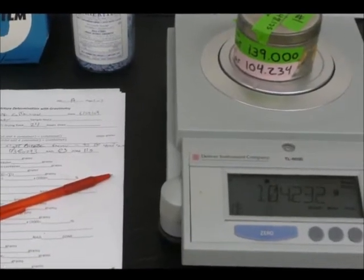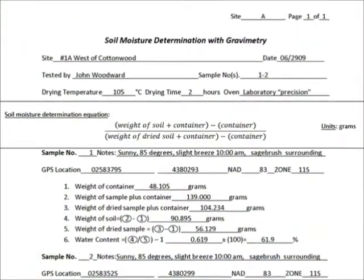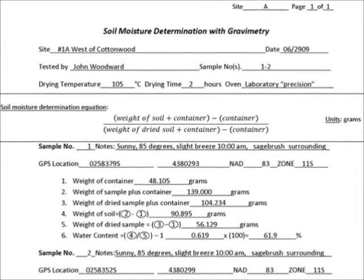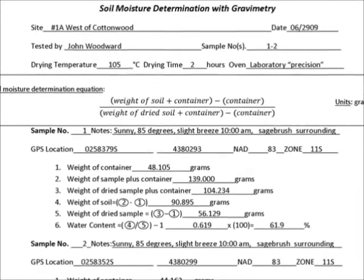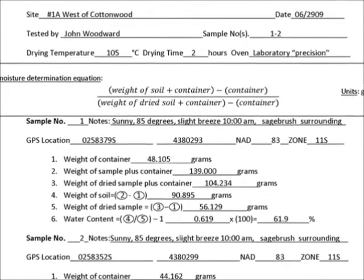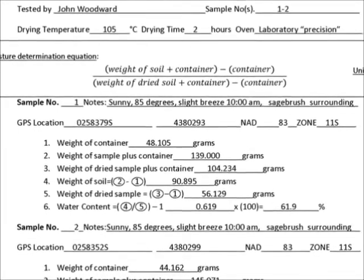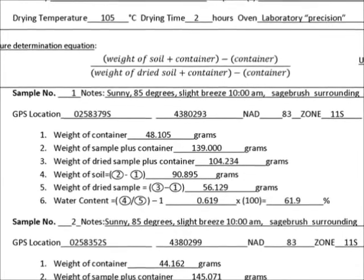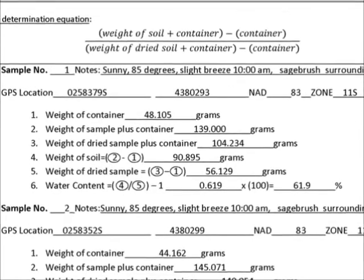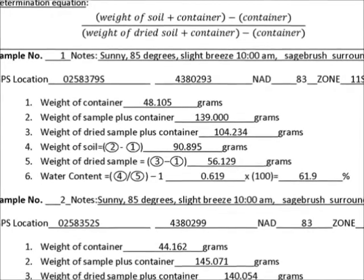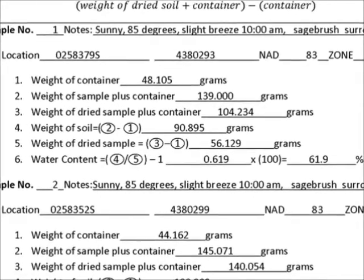Once again, ensure that the soil container and the datasheet are properly labeled. The final calculation can easily be performed on the datasheet with the soil moisture determination equation. In this case, the weight of soil plus the container is 139 grams, the weight of the container is 49 grams, and the weight of the dried soil plus the container is 104.2 grams. The numerator, or the weight of the soil plus container minus the container weight, would be 139 grams minus 49 grams. This should then be subtracted by 1 and multiplied by 100, giving a final percentage of 61.9 or 62 percent.